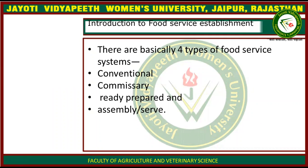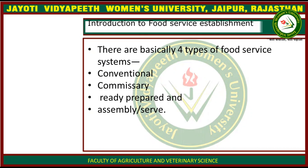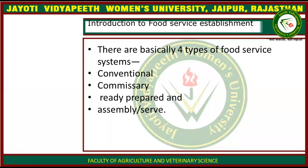There are mainly four types of food service system. First is conventional, second is commissionary, third is ready prepared, and fourth is assembled. Now we will talk about each individual topic in brief.